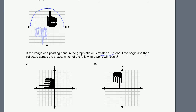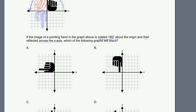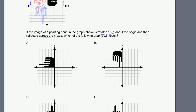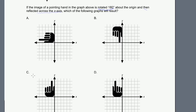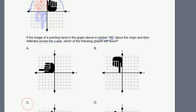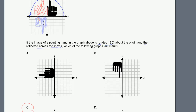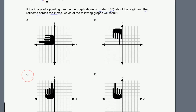The second part is then reflecting across the x-axis. If we reflect this across the x-axis, it's going to look like this. So that should be our answer. Looking at the choices, that looks like choice C — where the finger is closer to the vertical axis. We rotated around and then flipped. That is choice C.